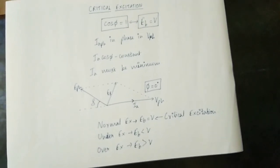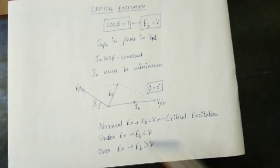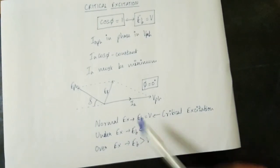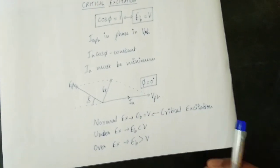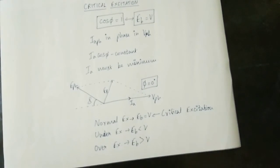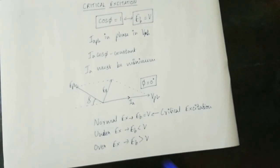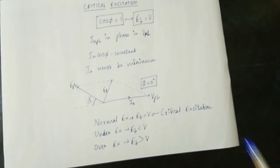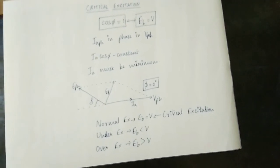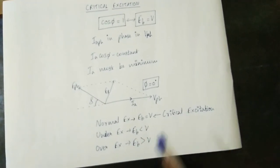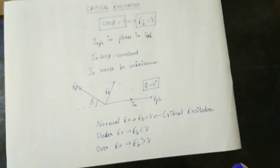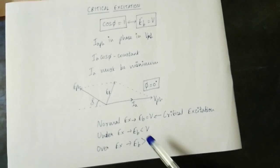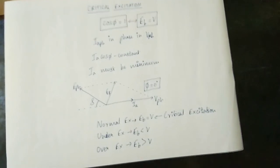Normal excitation and critical excitation: EB is equal to V. Back EMF induced and input VP is equal to V. One difference — in normal excitation the power factor is lagging, and critical excitation is also lagging. Under excitation: EB is less than V, but the power factor is more and more lagging. Over excitation: EB is greater than V, it is more and more leading.